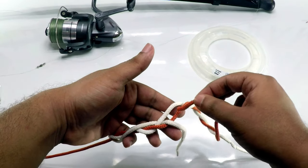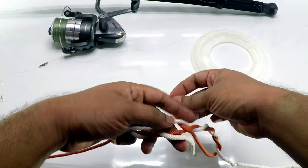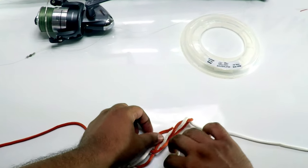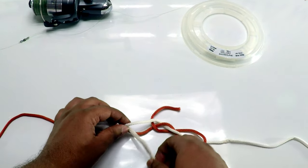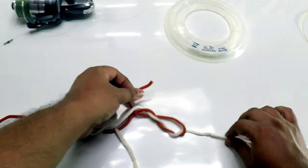Once you've done that, remember to pass the line through the socket, so the white line passes through this side and the red line reaches the other side.